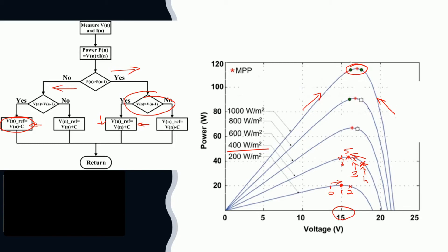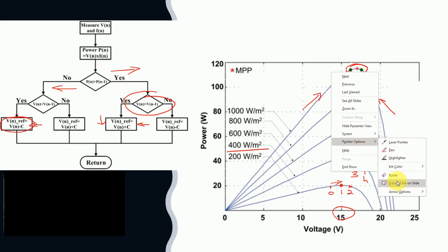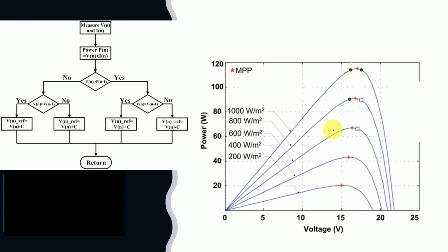Now let us consider rapidly changing environmental conditions. Let me clear this and start again for a 600 W/m² irradiation. Suppose I was operating at point zero, gave a positive perturbation, and reached point one. At point one, the power is greater than at point zero and the voltage at point one is also greater than at point zero — so we give another positive increment to the voltage. After this positive increment, the irradiation changes to 800 W/m².